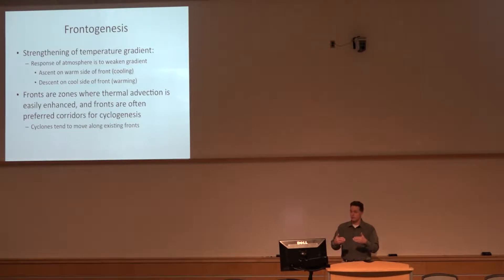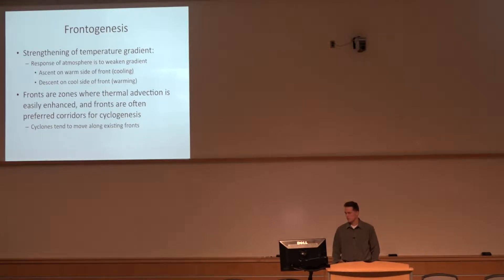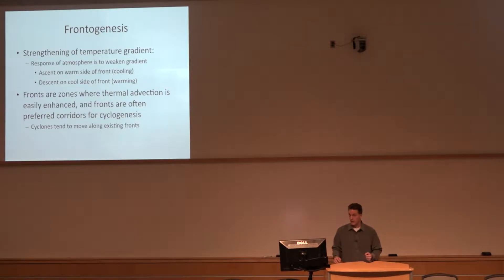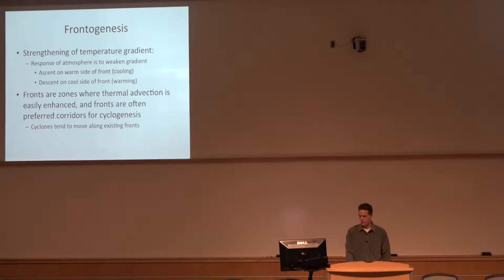These zones also have enhanced advection — you've got a tighter gradient to begin with, so all the QG processes tend to be maximized along these enhanced thermal gradients. They're corridors for cyclogenesis, and generally we're talking about thermal gradients in the lower troposphere, something you'd see at the surface up through about 850 or 700 millibars. The whole point is this stuff is all tied together — the corridors of cyclogenesis, frontogenesis, the QG forcing for ascent and height change all tend to be related to where the gradients are strongest.